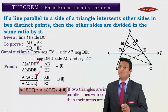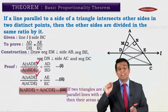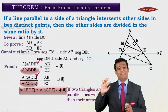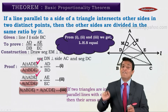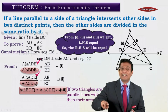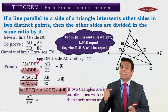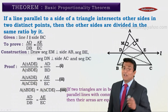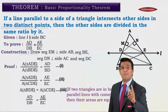From statement number 3, we have area of triangle BDE equal to area of triangle CDE. This means the denominators of the left-hand sides of statements 1 and 2 are equal. Therefore, combining statements 1, 2, and 3, the left-hand sides are equal, and so the right-hand sides are also equal. We get AD upon DB equals AE upon EC — and the proof is done.